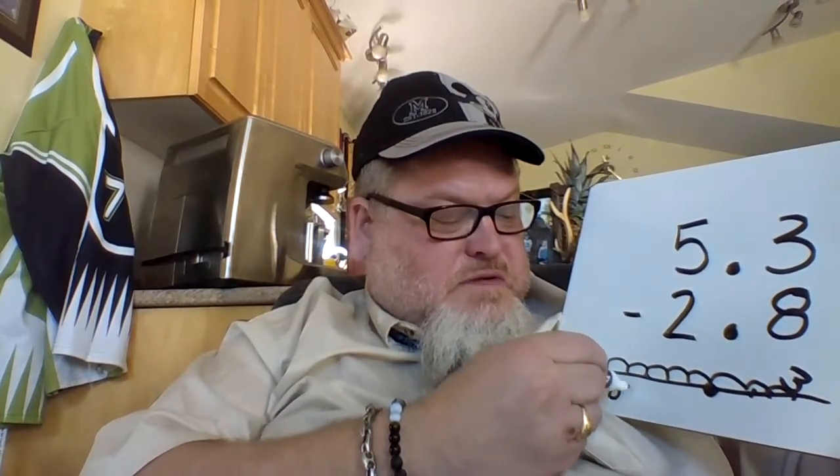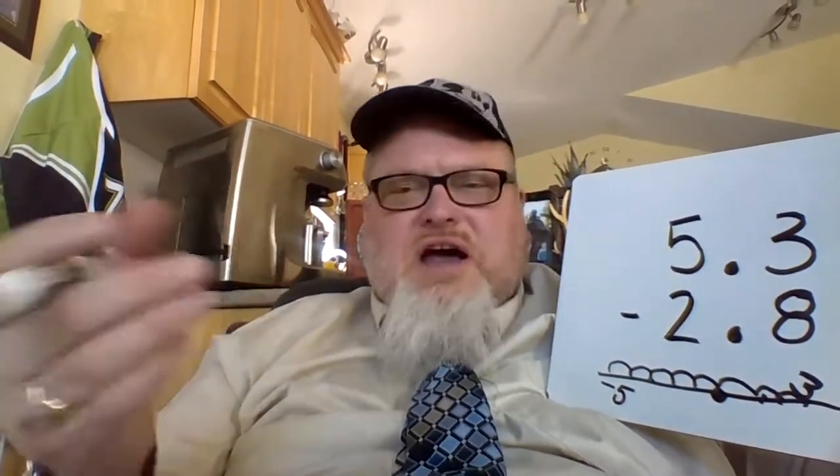5.3 take away 2.8 — if you take 8 from 3, you're going to get what we call a negative number. On the number line, here's zero, then 1, 2, 3 — there's the 3. If you take away 8, you'd go 2, 1, 0, negative 1, negative 2, negative 3, negative 4, negative 5. Unfortunately that gives you a negative number, which we can't have in a regular grade 4 subtraction question.